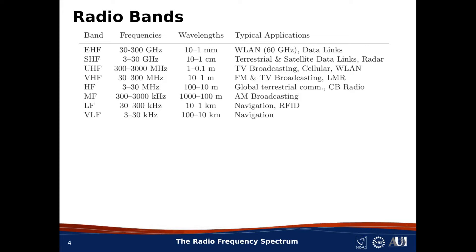HF stands for High Frequency, and refers to frequencies from 3 MHz up to 30 MHz, corresponding to wavelengths from 100 m down to 10 m. The total bandwidth of the HF band is 27 MHz, so the entire HF band comprises just a tiny fraction of what is available in higher frequency bands. In some higher frequency bands, the bandwidth of just one signal might be greater than the bandwidth of all of HF. HF facilitates very long-range communications, so it is commonly used for communications which have to span great distances.